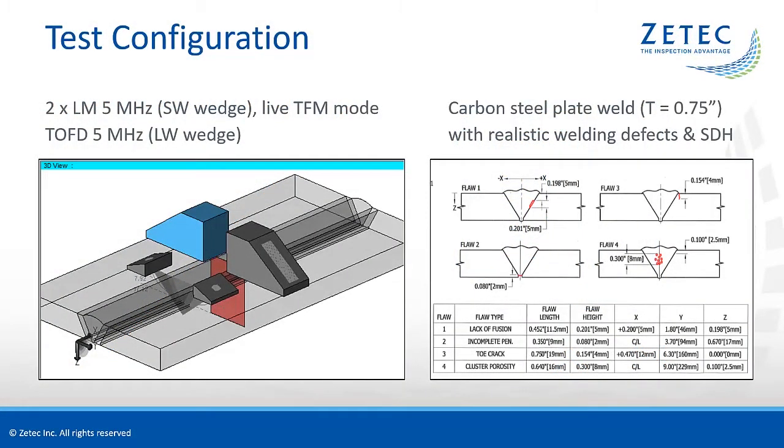For our demonstration, we are using a weld specimen with a wall thickness of 19 mm or 3 quarters of an inch. It contains typical manufacturing flaws: a lack of fusion, incomplete penetration, a toe crack, and a cluster of porosity.